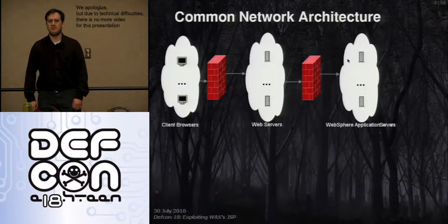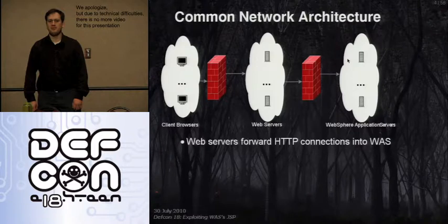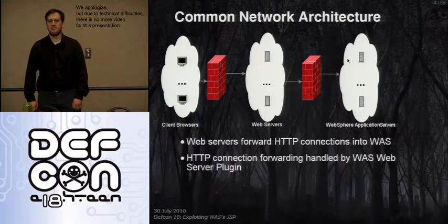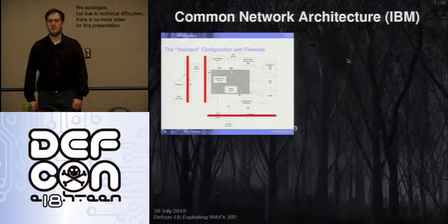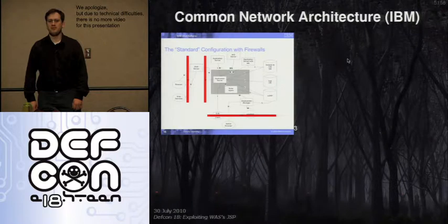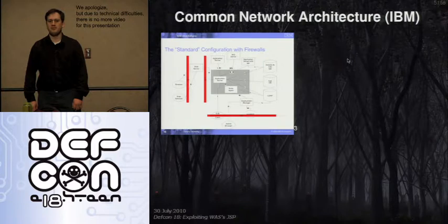Here we have the common network architecture you usually see in a WAS deployment. You have client browsers on the internet connecting through a firewall to your web servers. Those web servers then redirect through the HTTP WAS web server plug-in into the actual web servers. If you compromise the web app on WAS or WAS itself through the web container, whatever you compromise has full access to most of the internal resources that WAS has, with some exceptions depending on the network deployment.